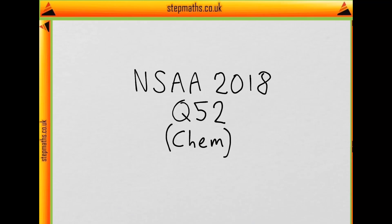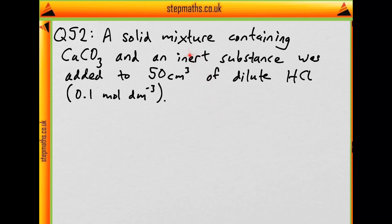This is question 52 on chemistry from the 2018 ENSA. You're told that a solid mixture containing calcium carbonate and an inert substance was added to 50 ml of dilute hydrochloric acid with a concentration of 0.1 molar.